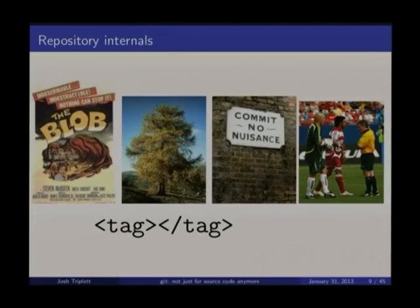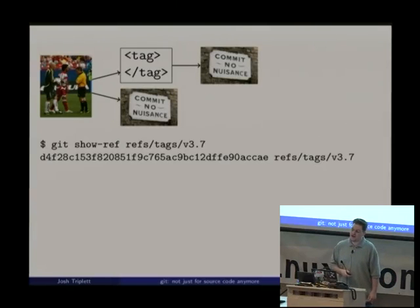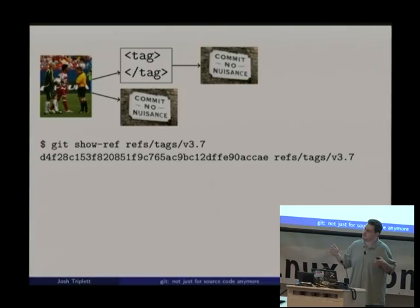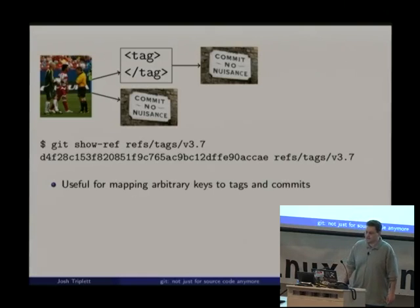Let's go through these in roughly reverse order. A ref can point to either a tag, which points to a commit, or directly to a commit. It'll point to a tag when it's something in refs/tags. It'll point to a commit when it's in refs/heads, like a branch. Using the Linux kernel as an example, if we show refs/tags/v3.7, normally this is just a file in .git, but sometimes it's stored in one giant packed-refs file — a nice efficiency when you have hundreds of thousands of branches.